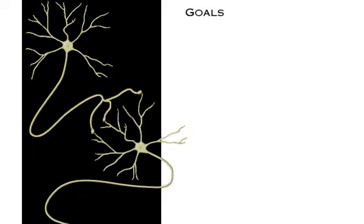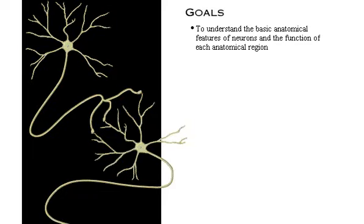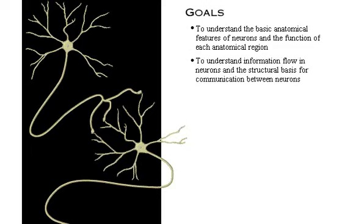Your goals for learning are to understand the basic anatomical features of neurons and the function of each anatomical region, and to understand information flow in neurons and the structural basis for communication between neurons.